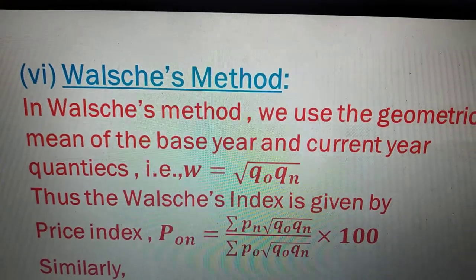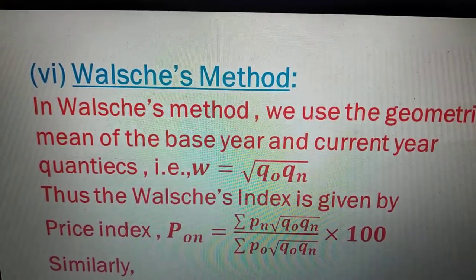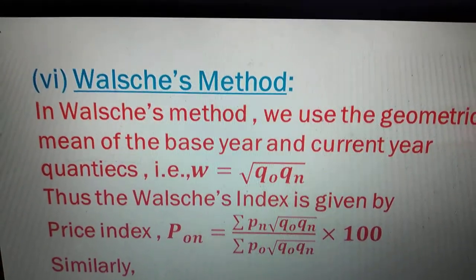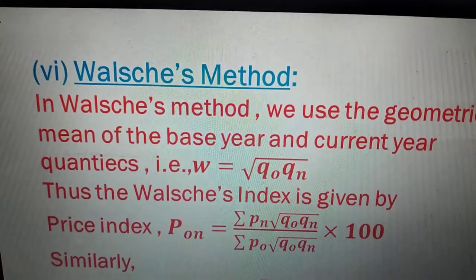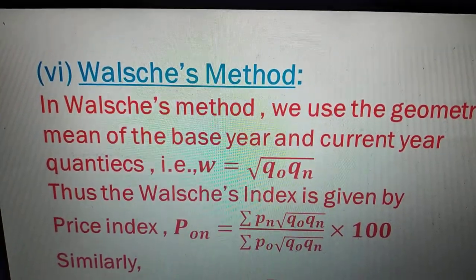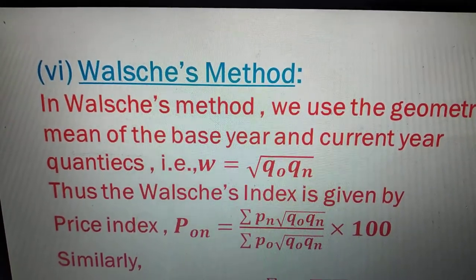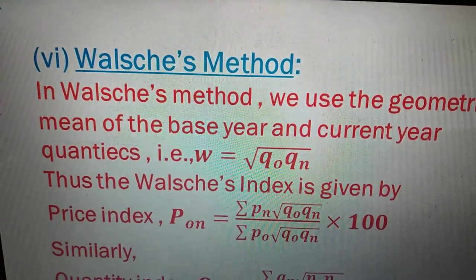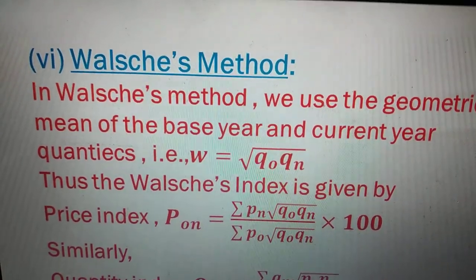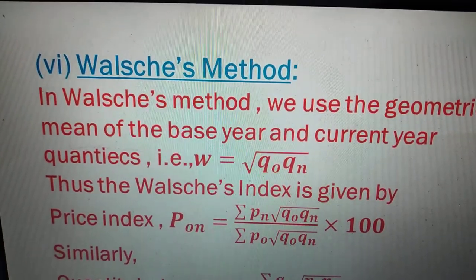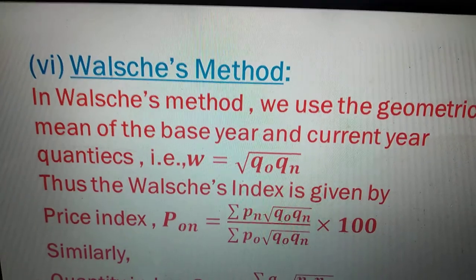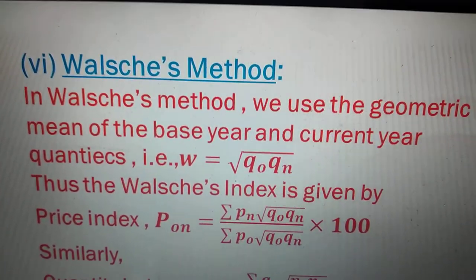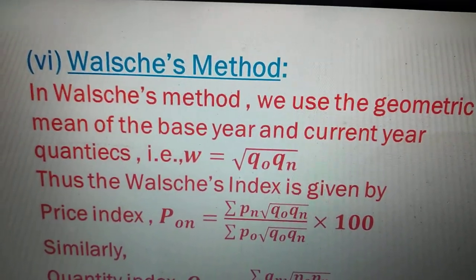Root over q-suffix-o into q-suffix-n is the geometric mean of the base year and current year. Thus the Walsh's price index is given by: P-suffix-on equals summation of p-suffix-n multiplied by root over (q-suffix-o times q-suffix-n), divided by summation of p-suffix-o multiplied by root over (q-suffix-o times q-suffix-n), then multiplied by 100.